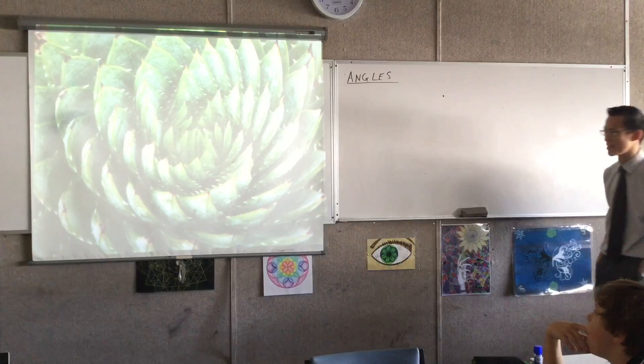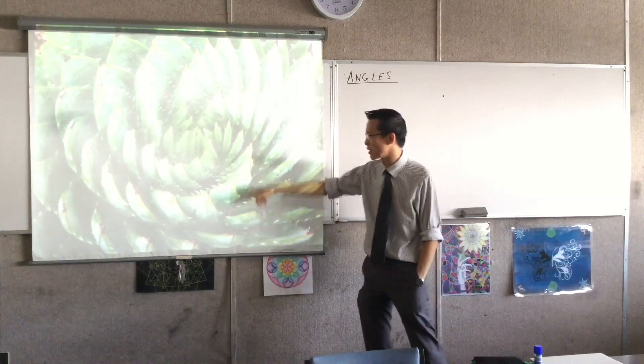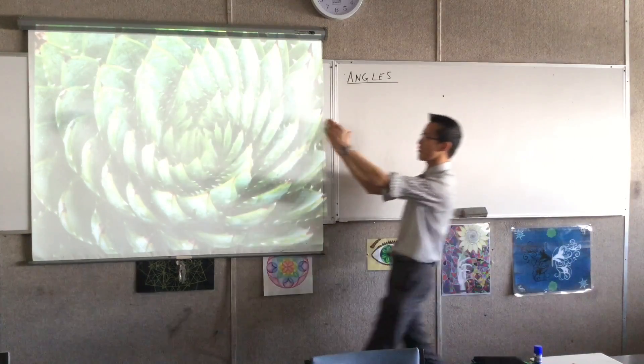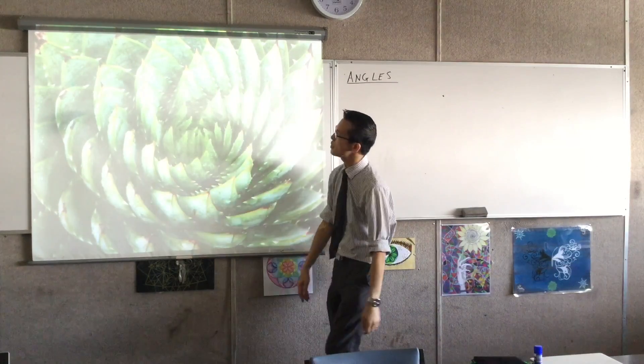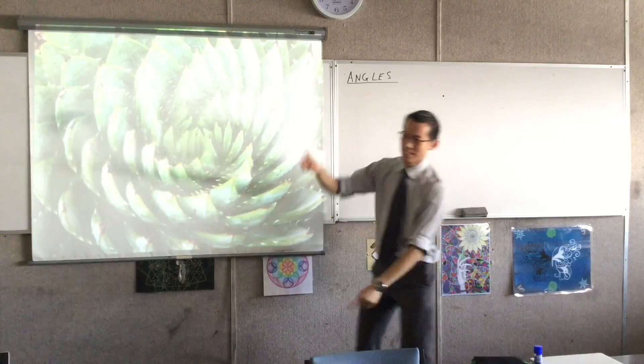My mum, she used to grow these. They're kind of like cacti, but they're not that pointy. Like, these are actually quite soft. And look at all of these angles swirling around. Look at each individual, I don't know what you call these, petals maybe? They form an angle, and they're all forming these different angles going around. Aidan, next one.